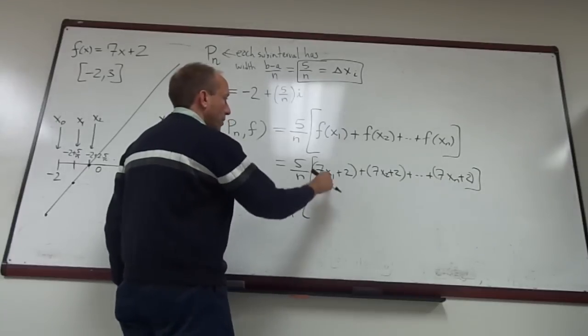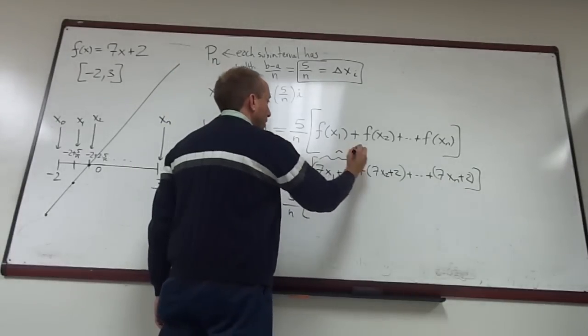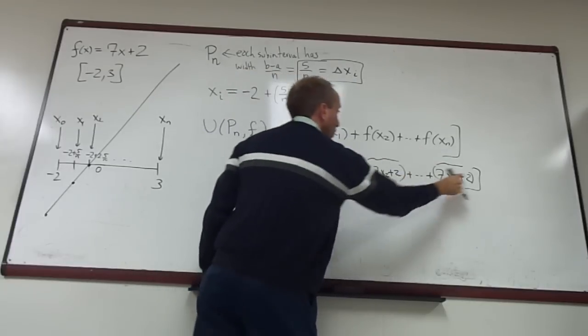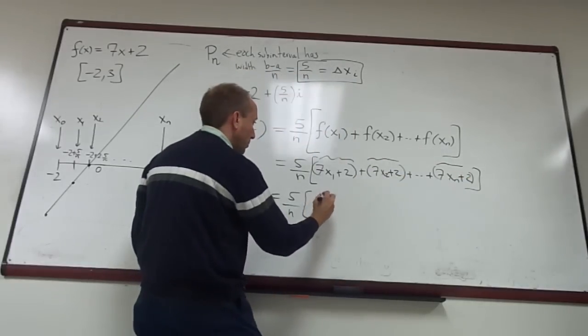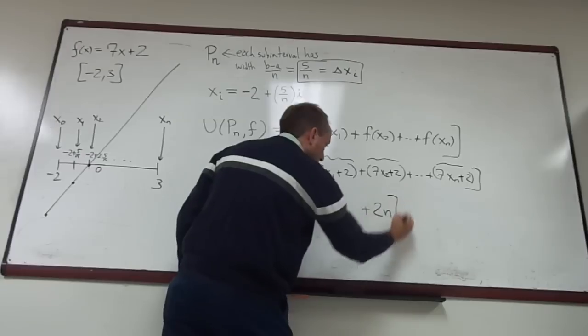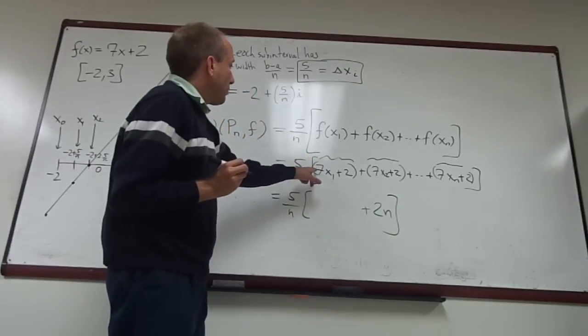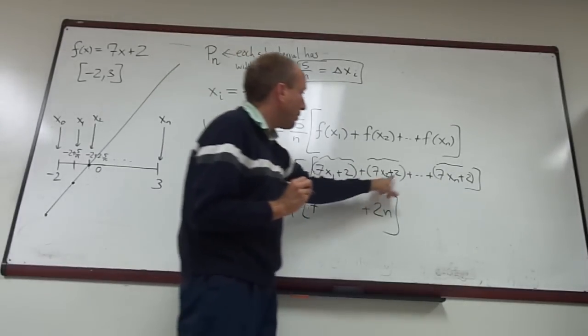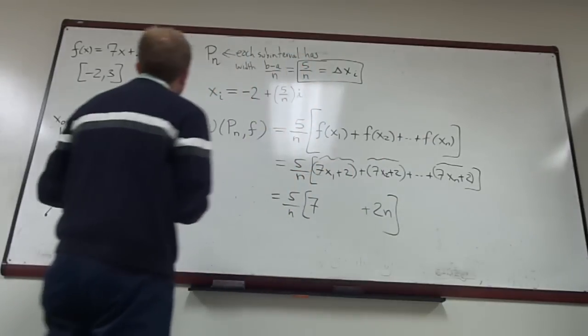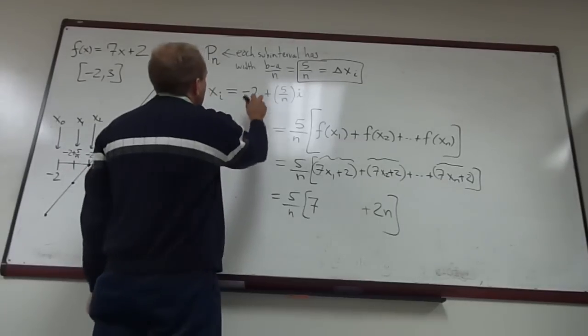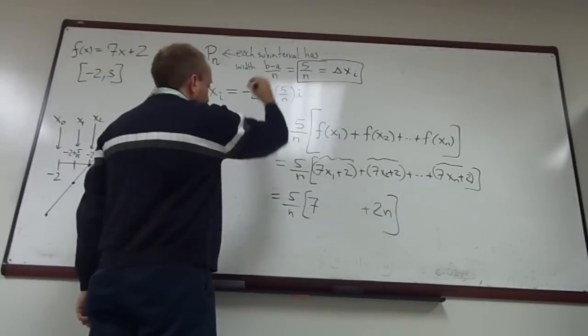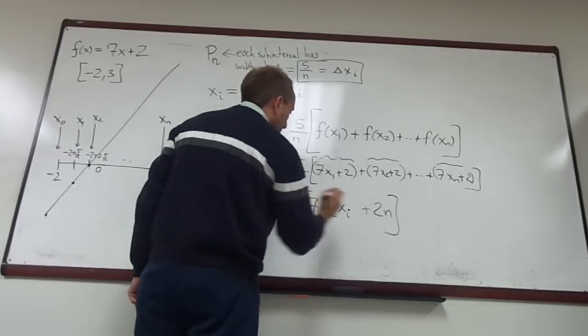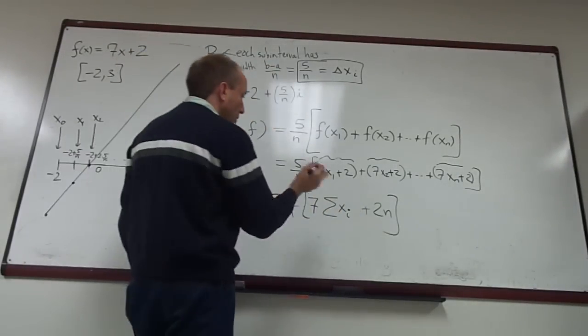And we can calculate what these are. So f of x1 would be 7x1 plus 2, and then 7x2 plus 2 for f of x2, and so on. We can do a little bit of algebra here. We have, let's see, there are n of these terms, right? So I've added 2 a total of n times. So let me do that part first: 2n. And then I have 7 being multiplied by each of these xis.